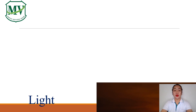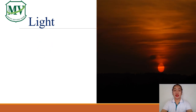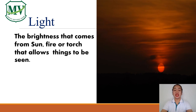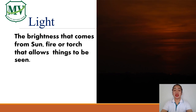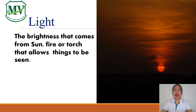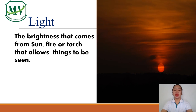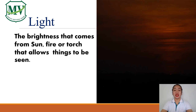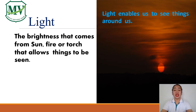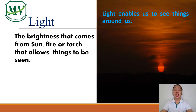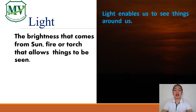Now, light. Light is the brightness that comes from the sun, fire, or torch that allows things to be seen. So light enables us to see things around us.